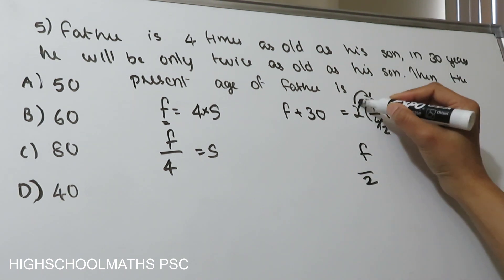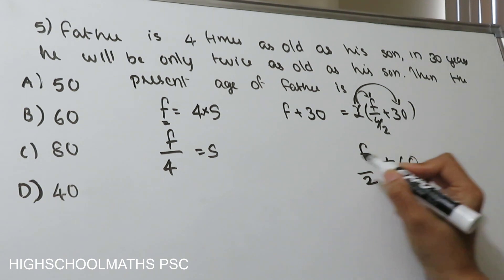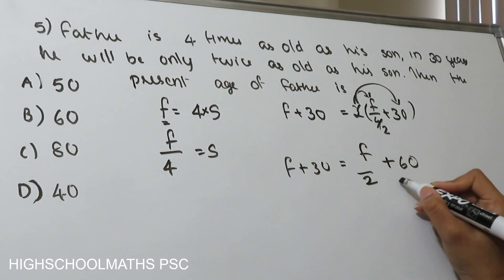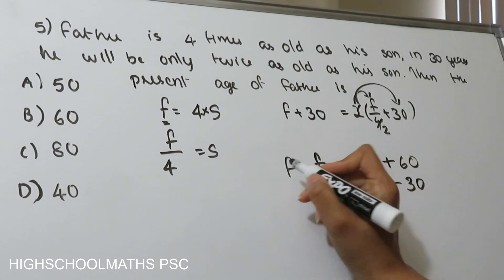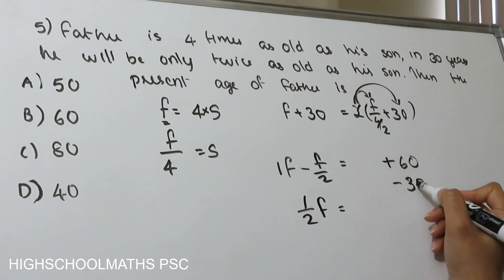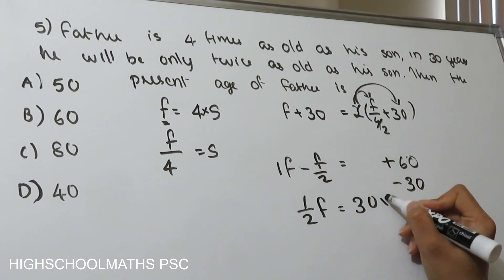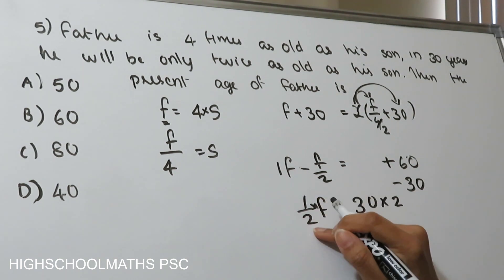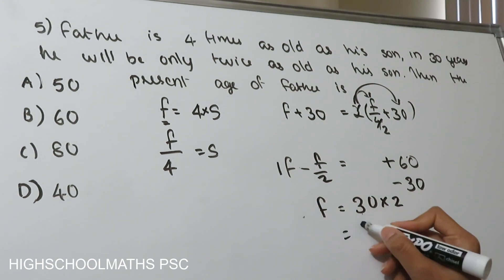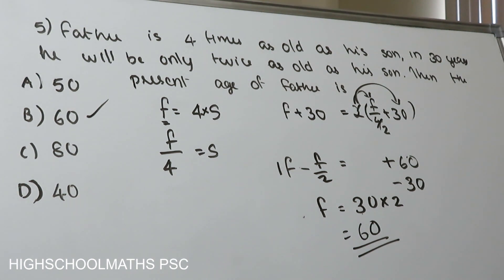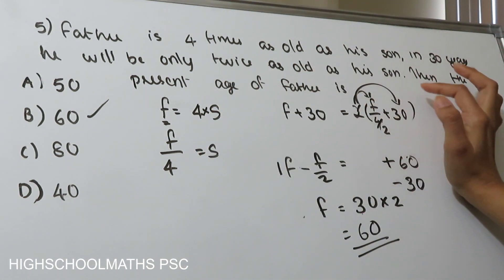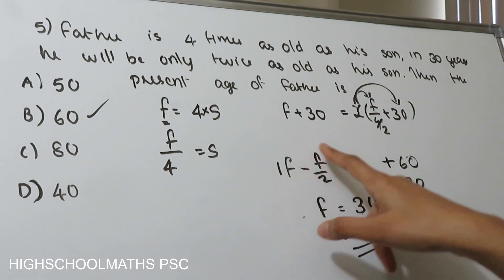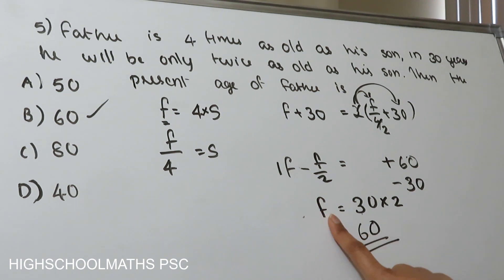Solving: 4s + 30 = 2s + 60, so 2s = 30, giving s = 15. The father's present age is f = 4s = 4 × 15 = 60. Substituting f/2 gives us the confirmation: the present age of the father is 60.